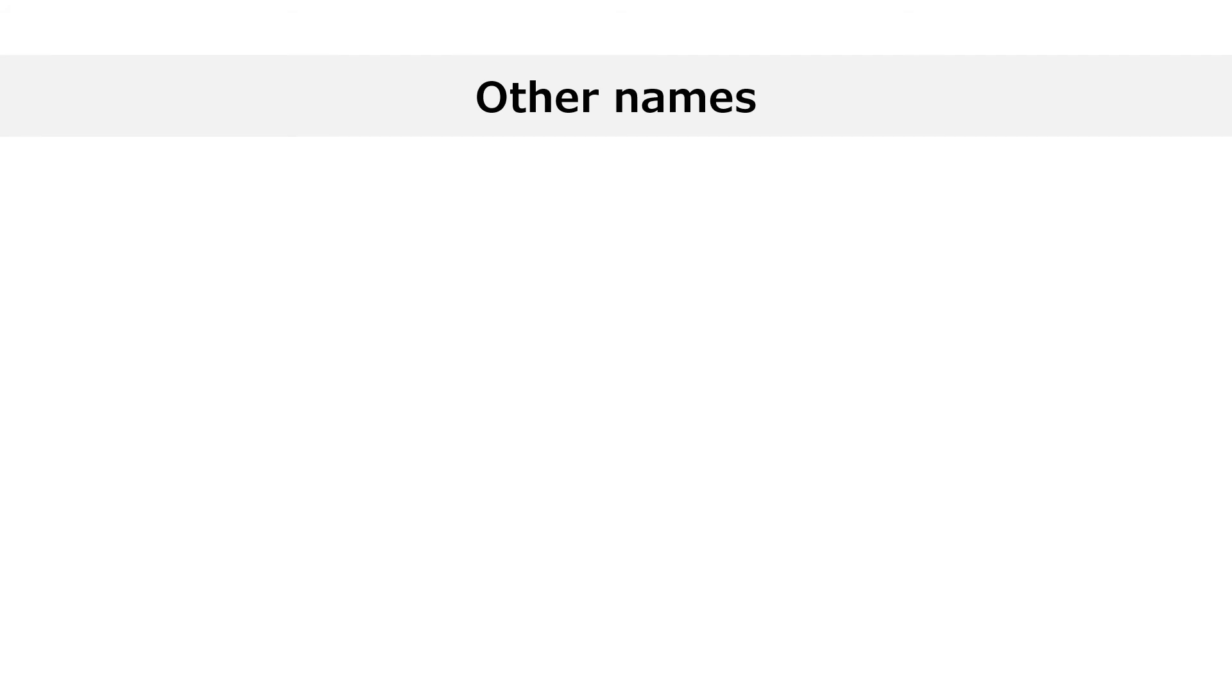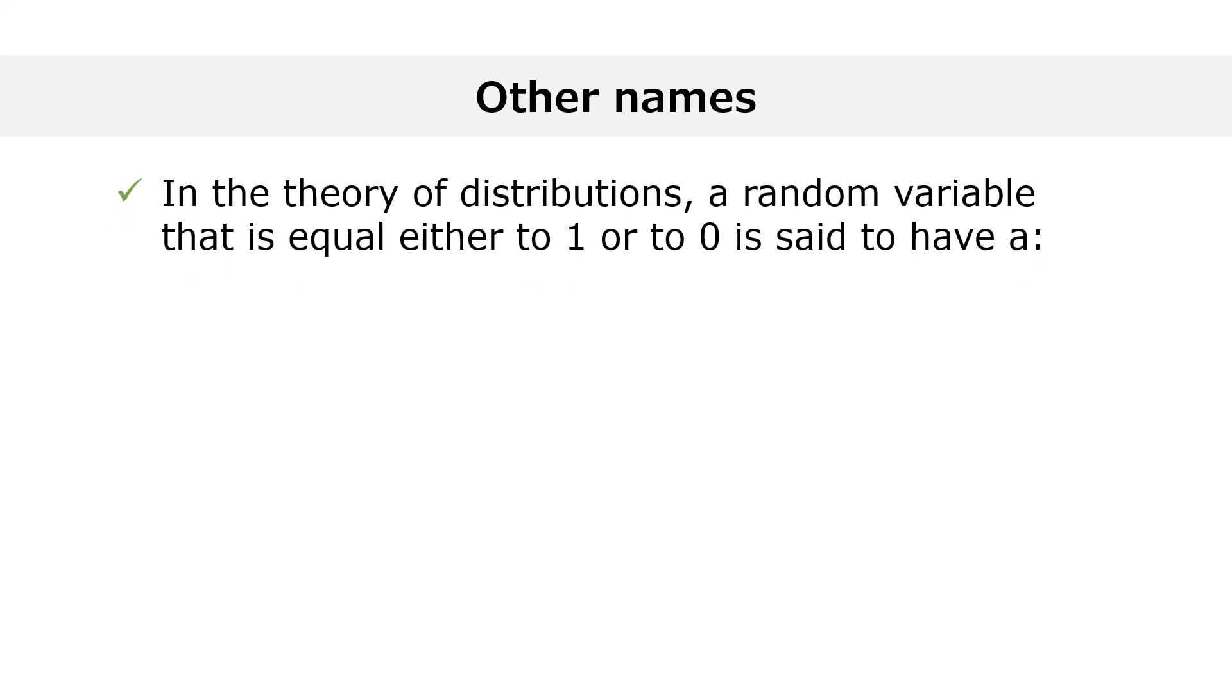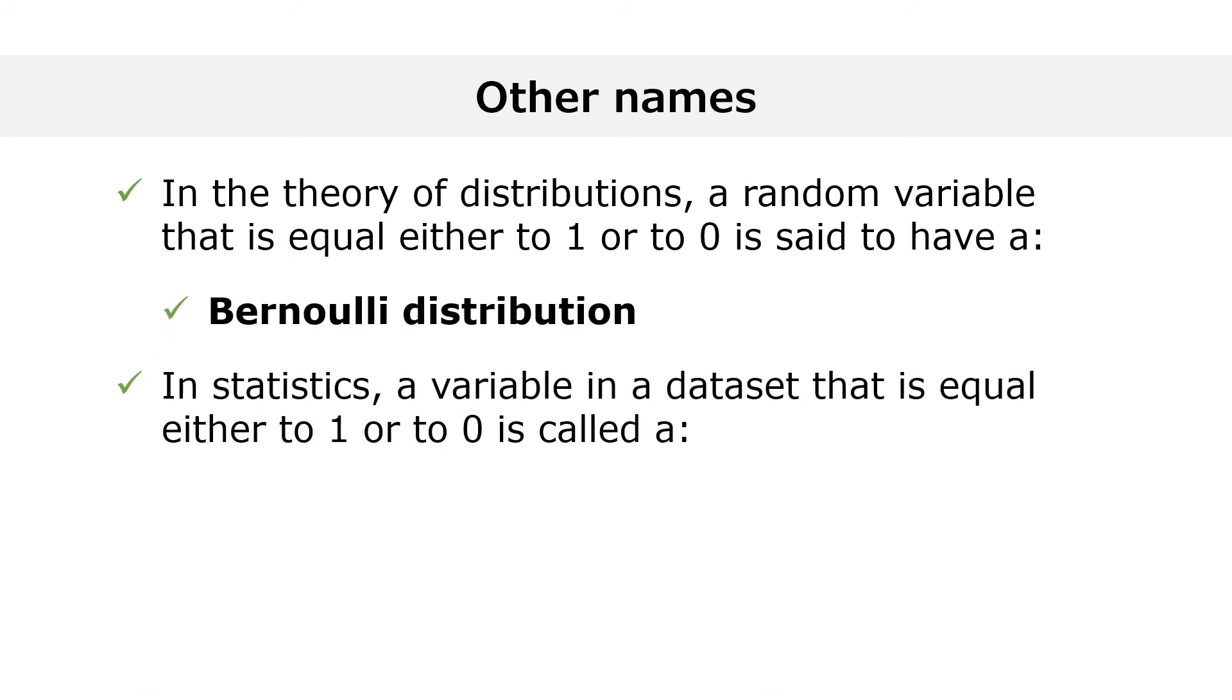Indicator functions often take other names. In the theory of probability distributions, a random variable that is equal either to one or to zero is said to have a Bernoulli distribution. In statistics, and especially in regression analysis, a variable that is equal either to one or to zero is called a dummy variable.